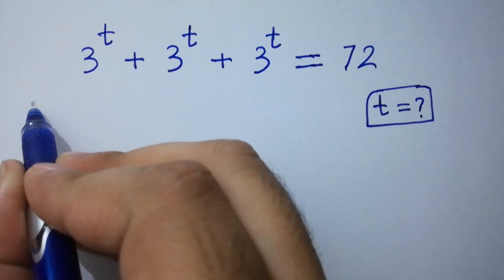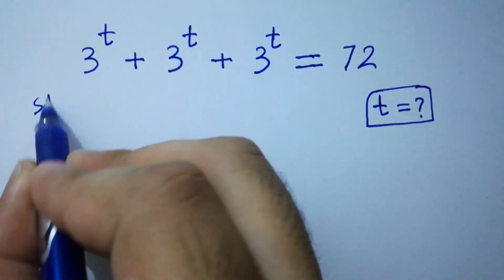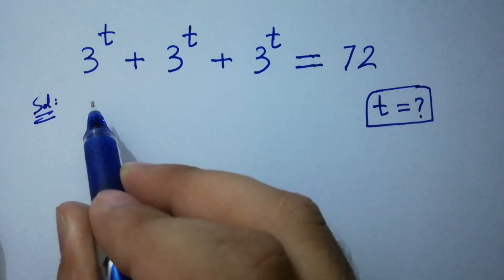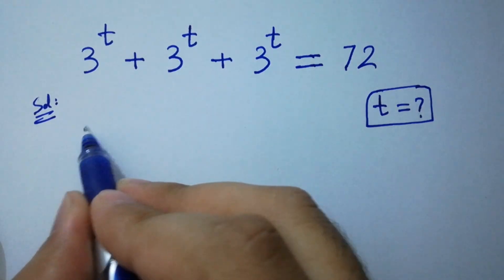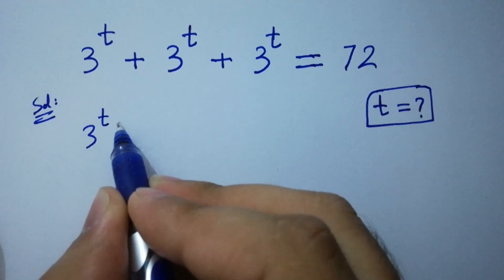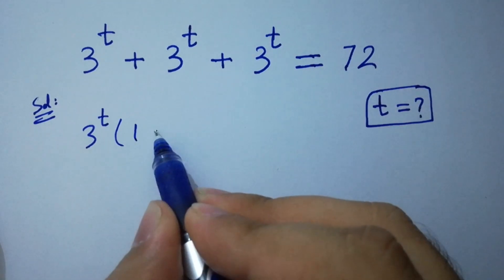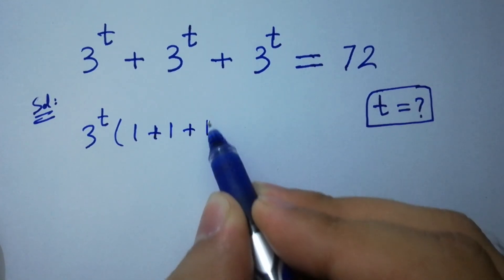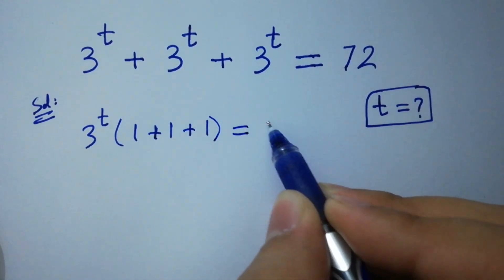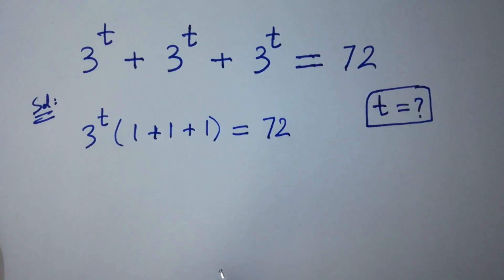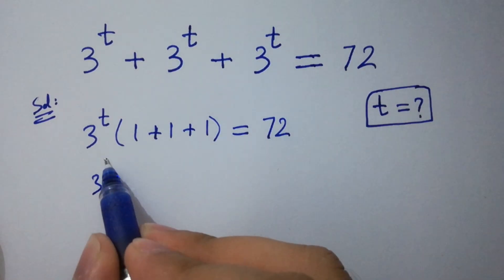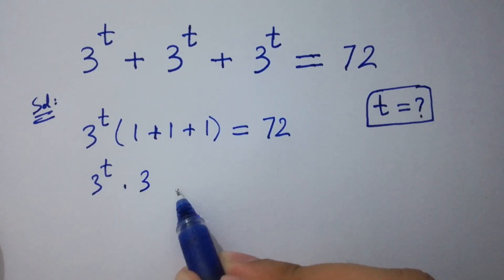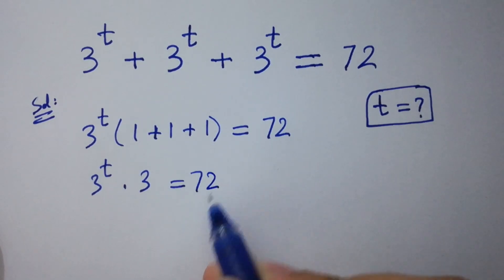Let's have a solution. On the left side, 3 to the power t can be common. We have 1 plus 1 plus 1, giving us 3 to the power t times 3 equal to 72.